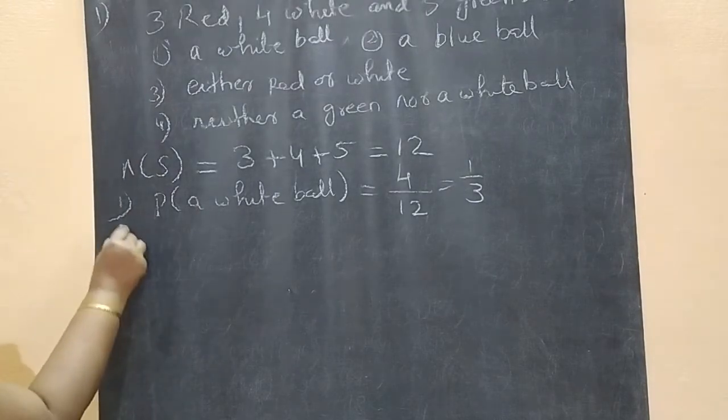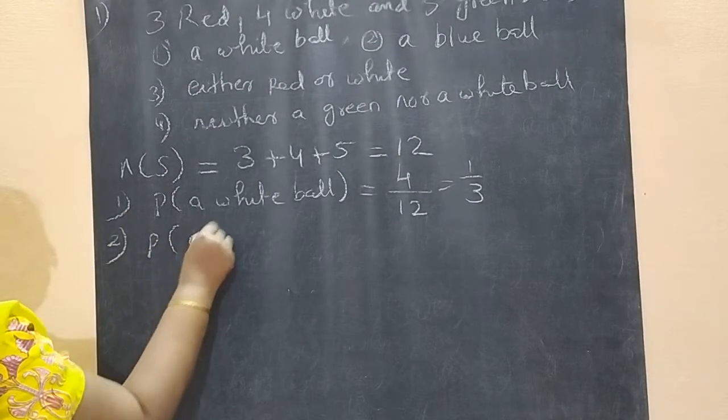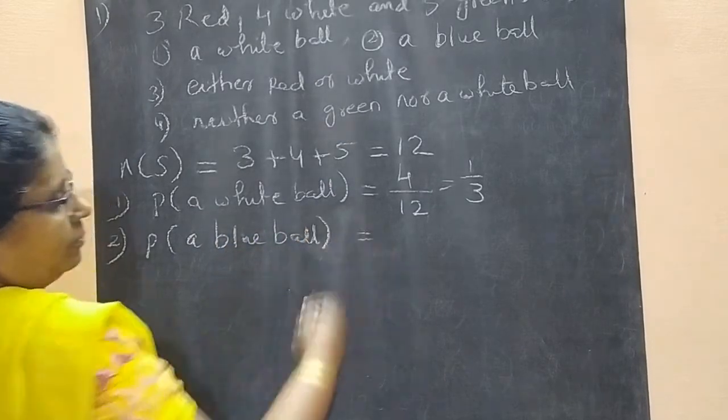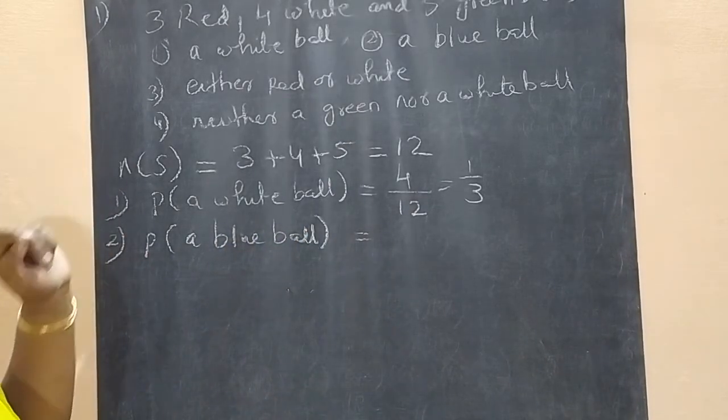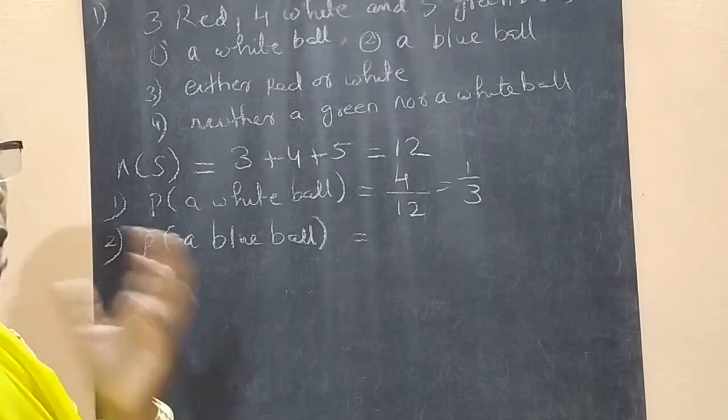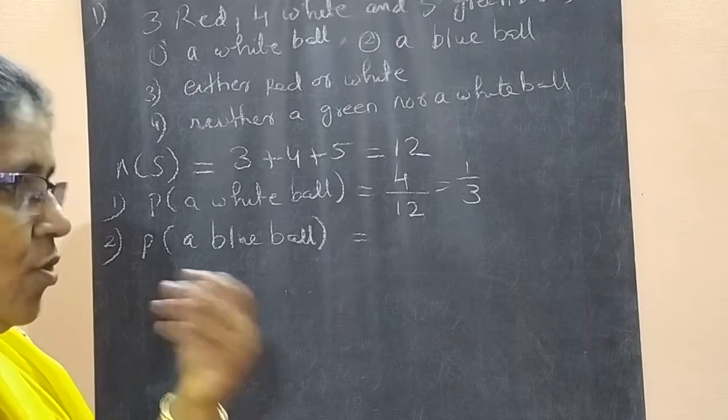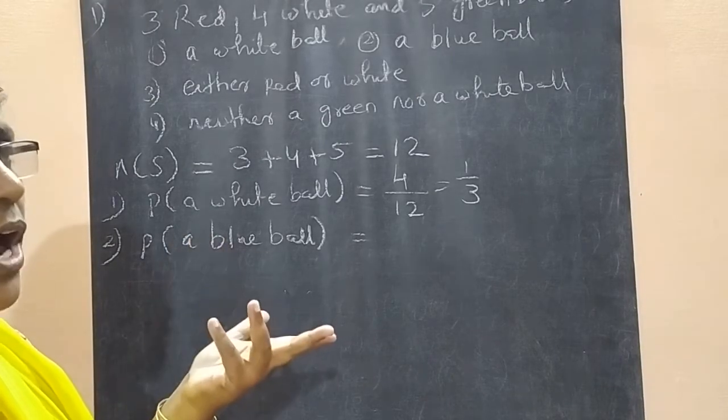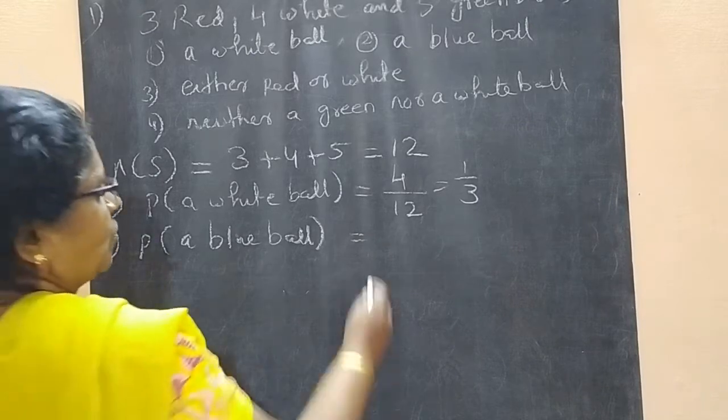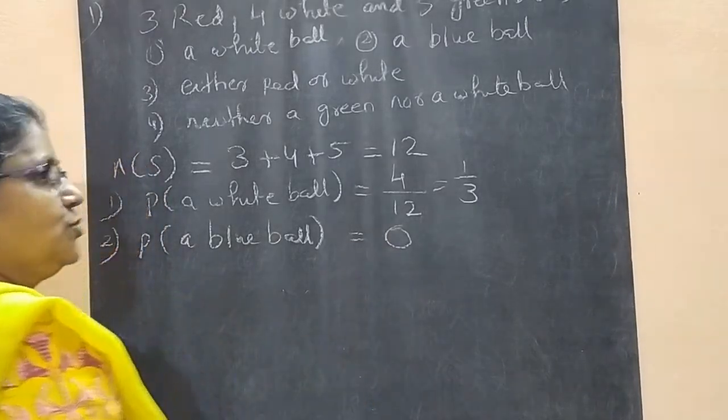Second is what is the probability of getting a blue ball? This bag contains only red, white and green. No blue ball. Then how we will get a blue ball? No chance. Means what? Impossible event. So what is the probability? Zero.